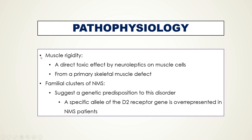An alternative theory is that muscle rigidity represents a primary effect on the skeletal muscle system, perhaps from a direct toxic effect of neuroleptics on muscle cells or from a primary skeletal muscle defect. Familial clusters of NMS suggest genetic predisposition, and a specific allele of the Dopamine D2 receptor gene is over-represented in NMS patients.